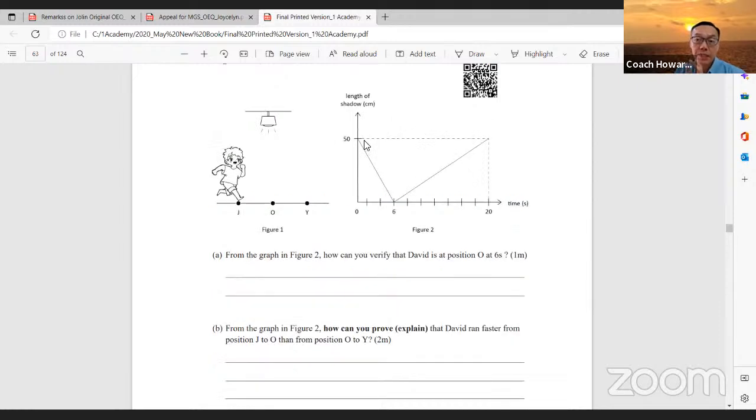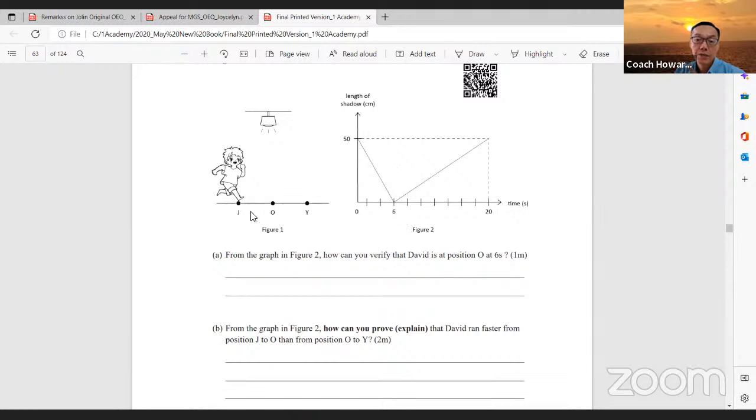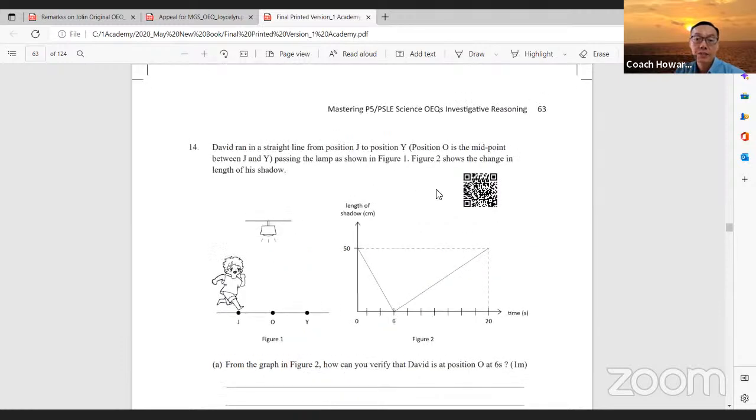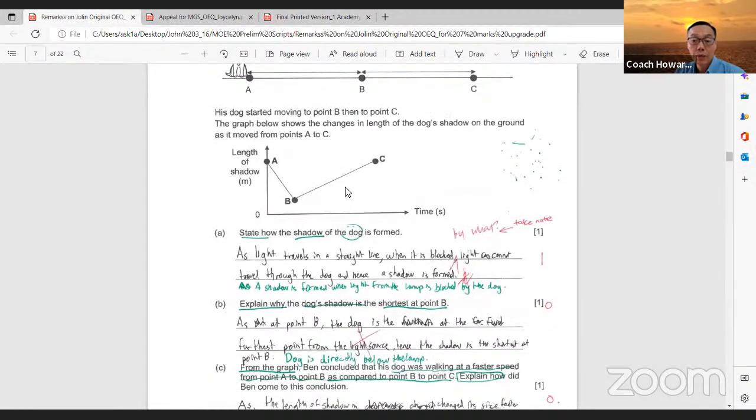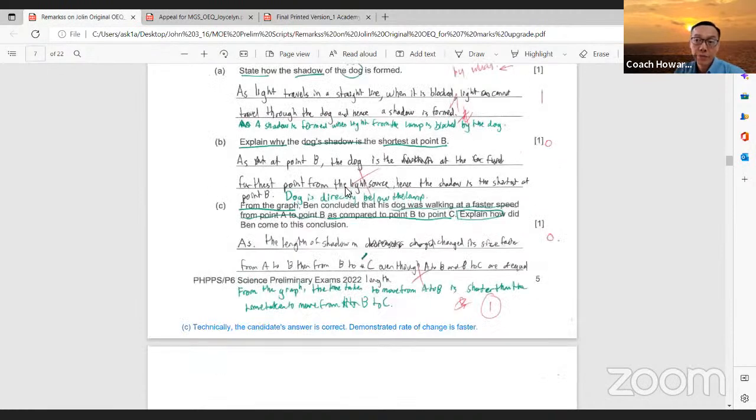Let me do a screen share to show you my publication of this book which is on this page. Can you see here? This is on my publication page 63. This child actually runs from J to O to Y. Joy. From J to O in 6 seconds and from O to Y in 20 seconds.